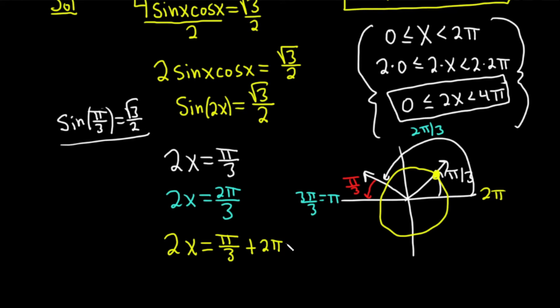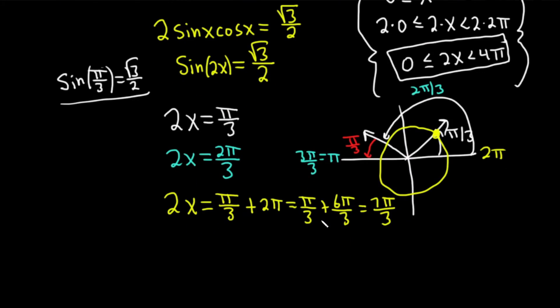Let's go ahead and add this now. This is π over 3. How do you write 2π as a number over 3? 6π over 3. Write 6 over 3 is 2. This is 7π over 3. So 2x is 7π over 3. That's another answer.